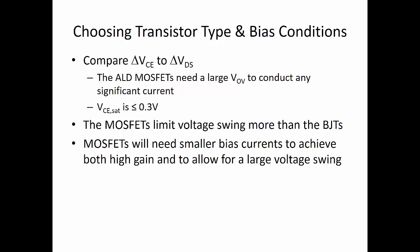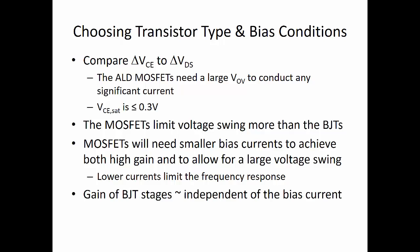You will also need smaller bias currents to achieve both high gain and to allow a large voltage swing for the MOSFETs. So, smaller currents mean smaller VOVs. And keeping in mind that the transconductance drops by a factor of a square root of the bias current, while the output resistance increases inversely proportional to the bias current, MOSFETs when biased with lower bias currents will give you larger voltage gains. But this, in turn, will limit the frequency response of the amplifier, as we'll see.